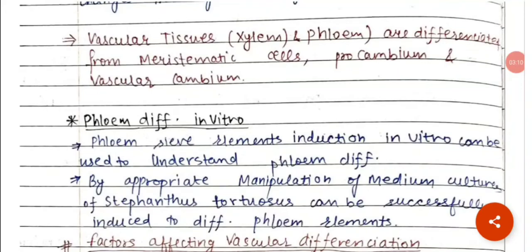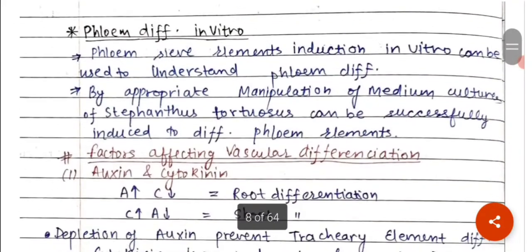Vascular tissues xylem and phloem are differentiated from the meristematic cells, procambium and vascular cambium.